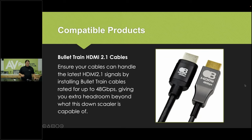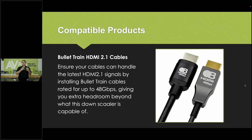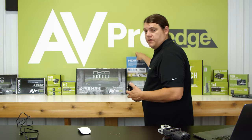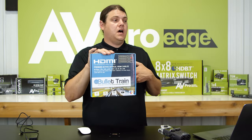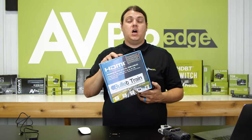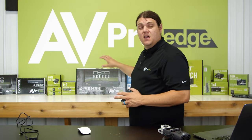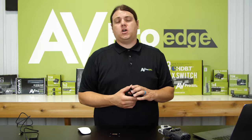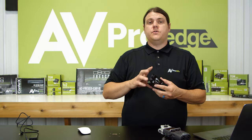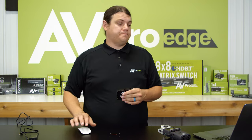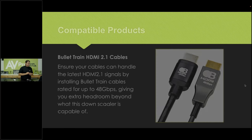Since we're talking about HDMI 2.1, the cables you've been using for years may not cut it — make sure you're using HDMI 2.1 certified cables. AV Pro recommends Bullet Train cables, which they manufacture. They offer lengths from short to long, and when distances get too long they switch to fiber optics, allowing 8K distribution across long distances anywhere in your installation.